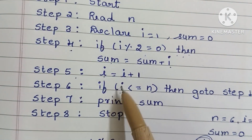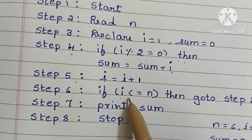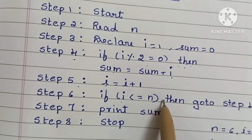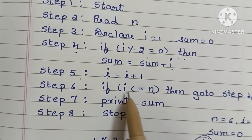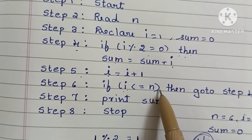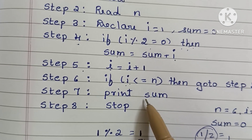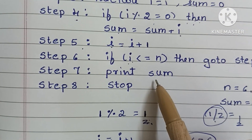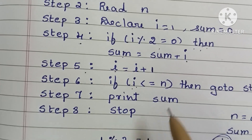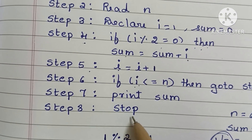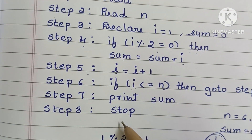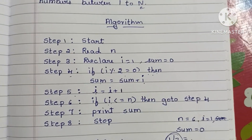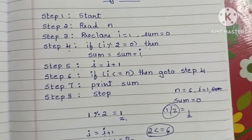This loop continues until i is greater than N. When the condition in step 6 is false — meaning i is greater than N — it exits the loop and executes step 7, printing the value of sum. Then step 8 stops the algorithm.